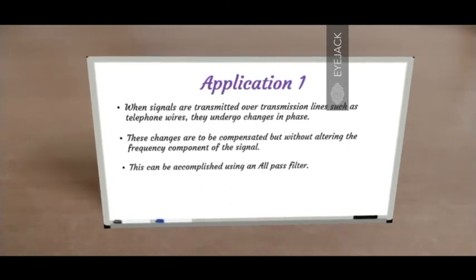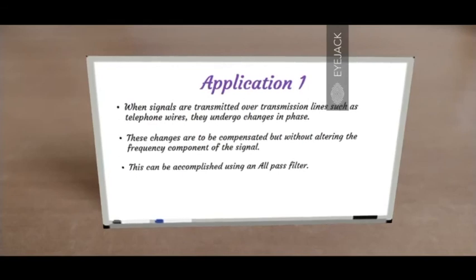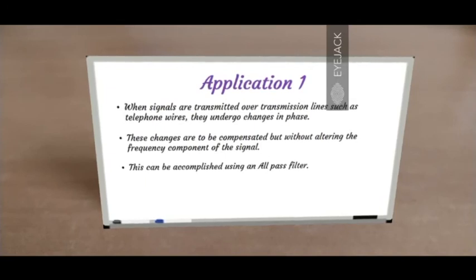Let's look at some applications of an all-pass filter. The first application is long telephone wires. When telephone signals are transmitted over telephone wires, they undergo changes in phase. Sound is a complex mixture of different frequencies with different amplitudes and different phase relationships. This complex phase relationship between different frequencies leads to constructive and destructive interference as the wave moves forward. The wave after traveling some distance is no longer the same as it was transmitted. An all-pass filter preserves the accuracy of the wave over long distances by adjusting the phase differences between the waves without altering the frequency components of the signal.